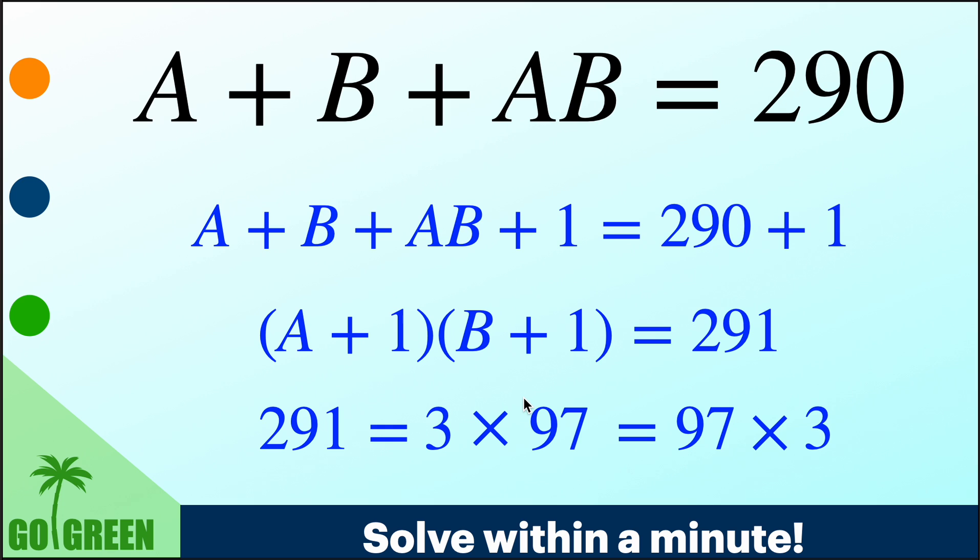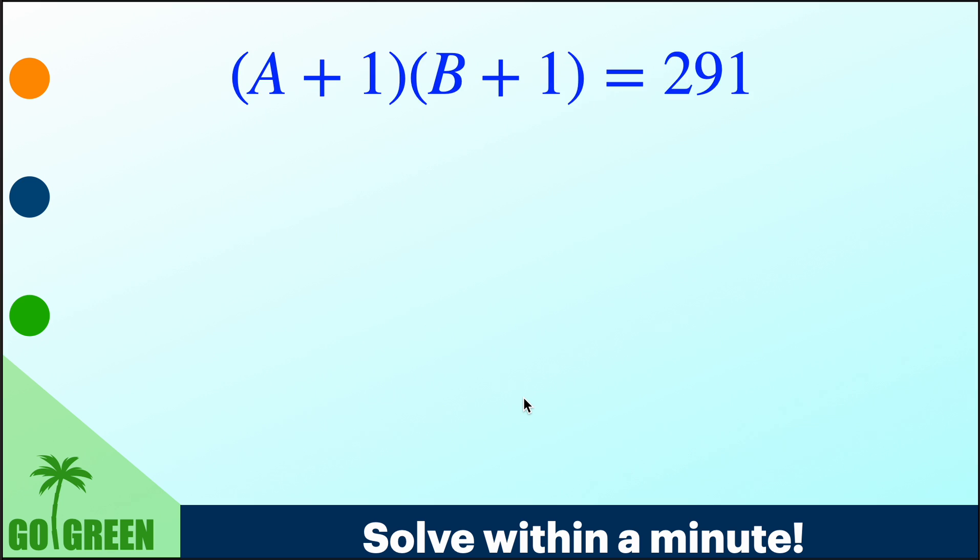1 into 291 case will not come again because that will imply either A or B is 0. So now A plus 1 into B plus 1 is 291. So basically A plus 1 is a number, you can just say XY, capital X, capital Y. X is A plus 1, Y is B plus 1. Their product is 291.